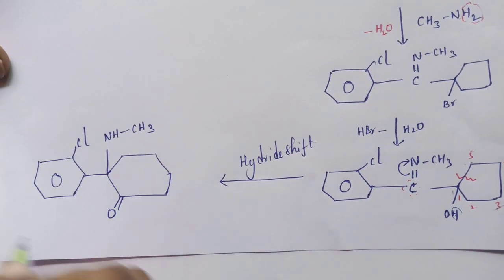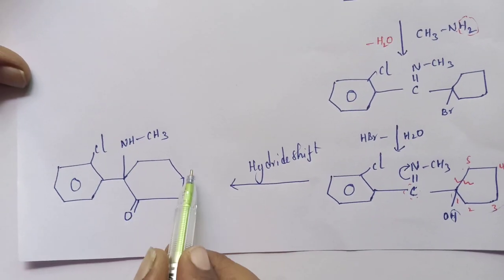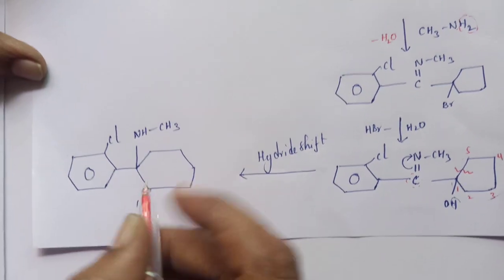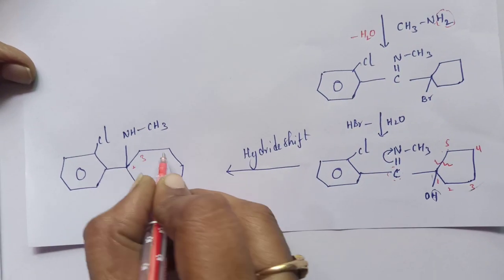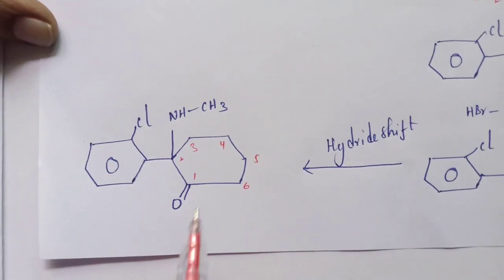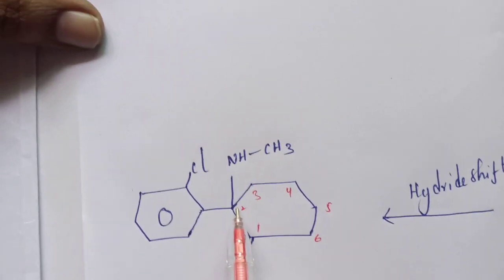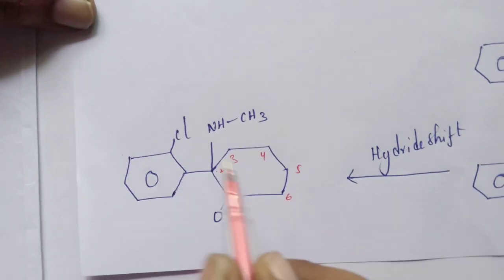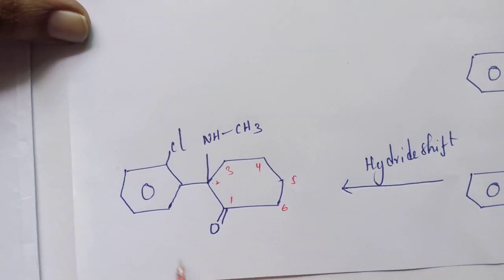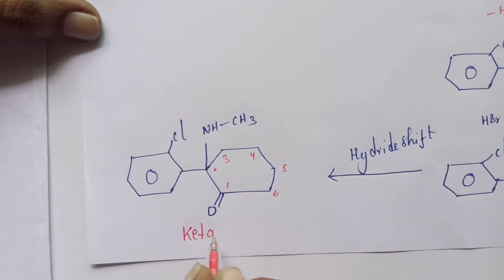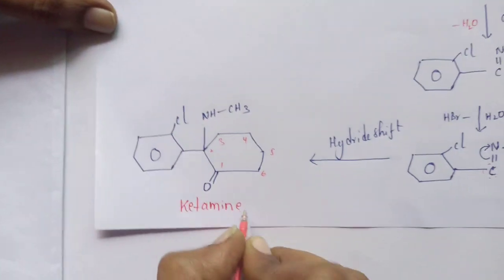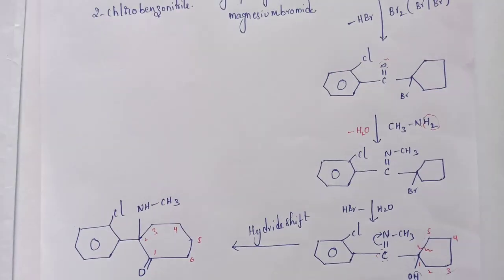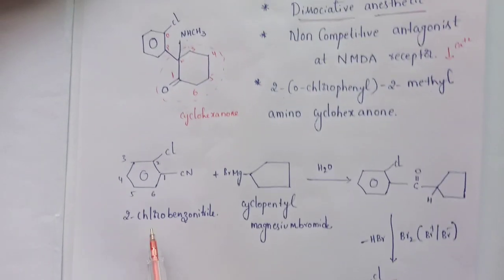Finally it forms the structure of ketamine — this is cyclohexanone. For the numbering: one, two, three, four, five, six. At the second position it consists of the chlorophenyl as well as the methylamino group. This is the structure of ketamine.